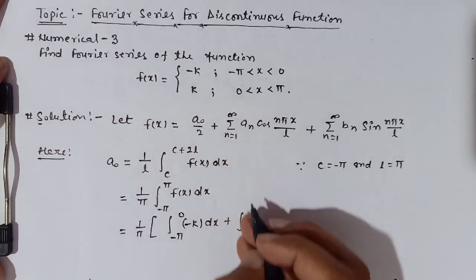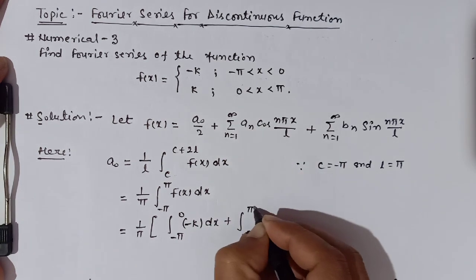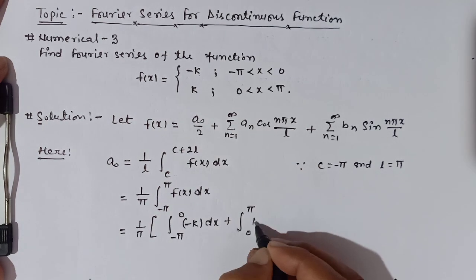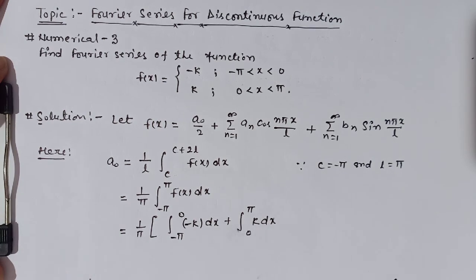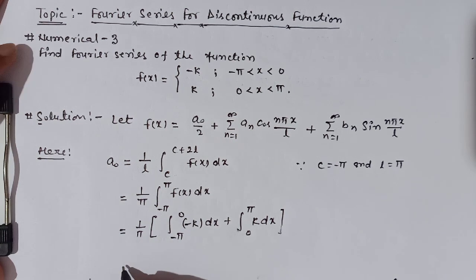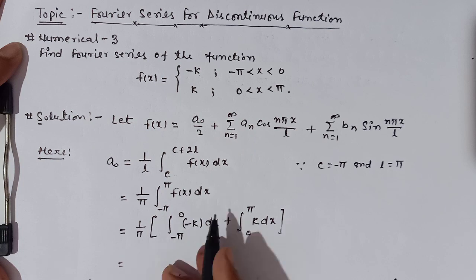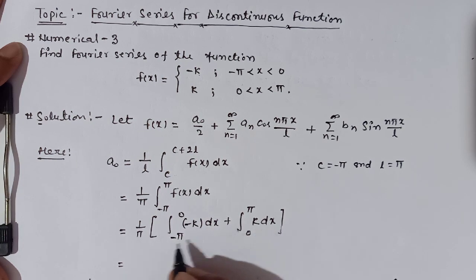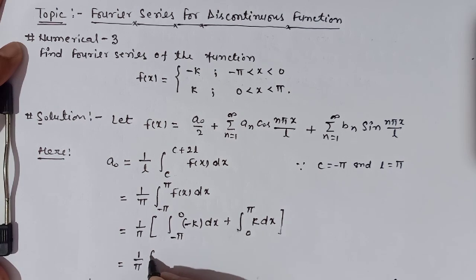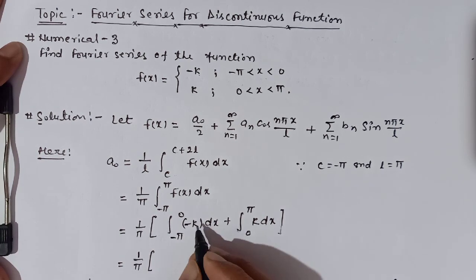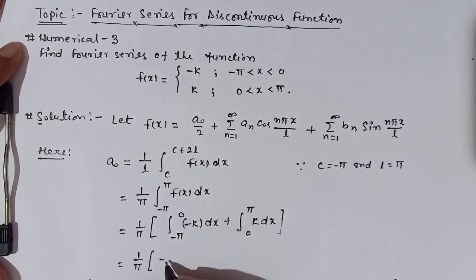We break the integral: from -π to 0 the function value is -k, and from 0 to π the function value is k dx. So a₀ = 1/π times the integral with function value k, giving us k·x.